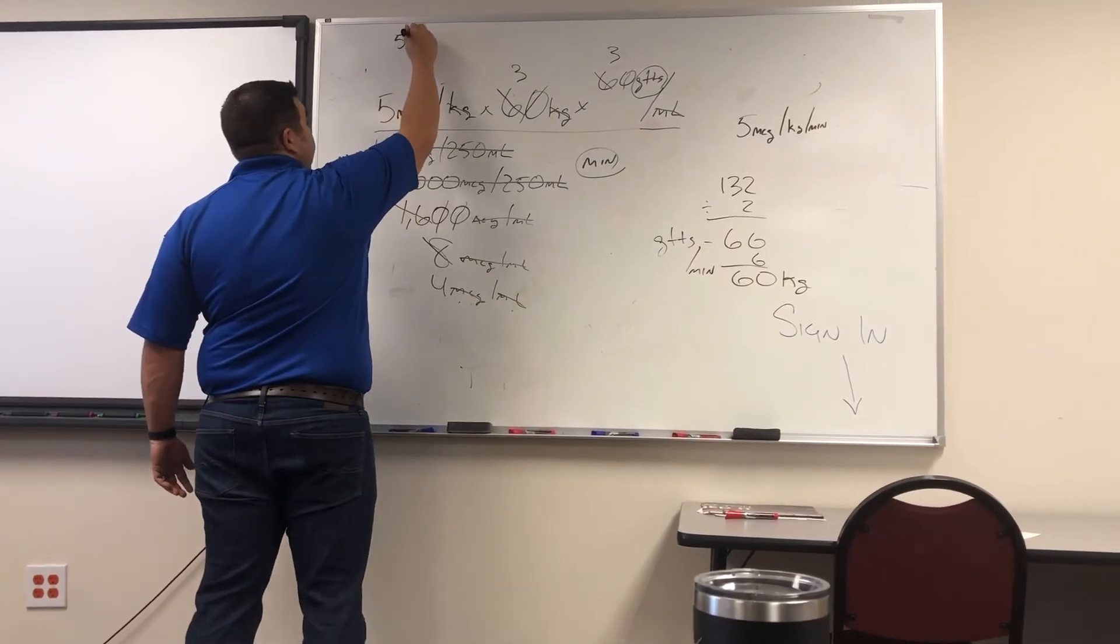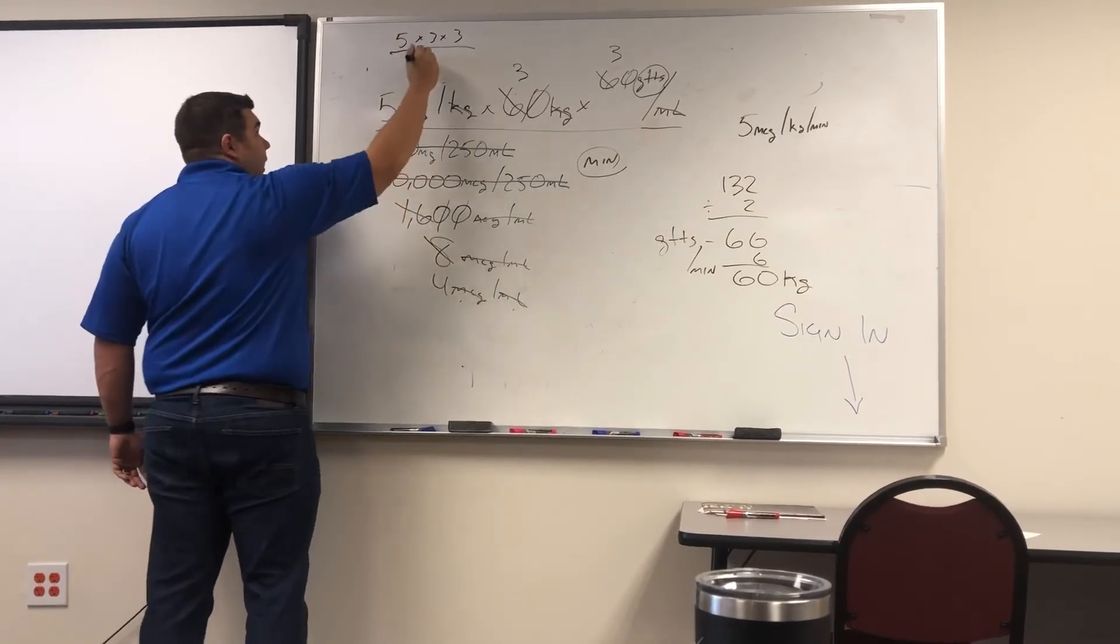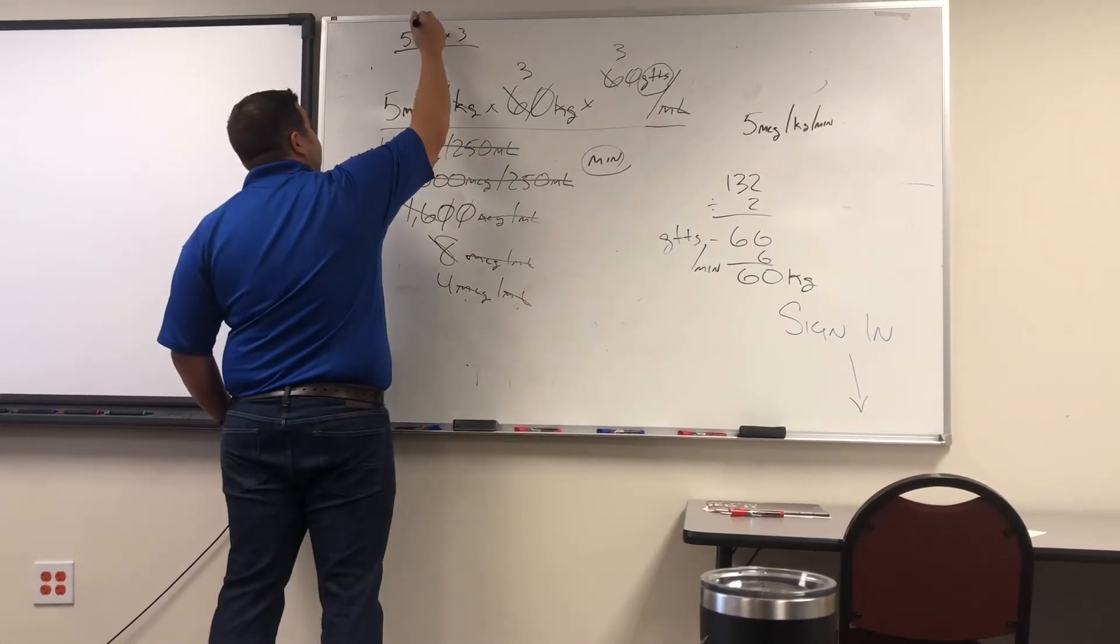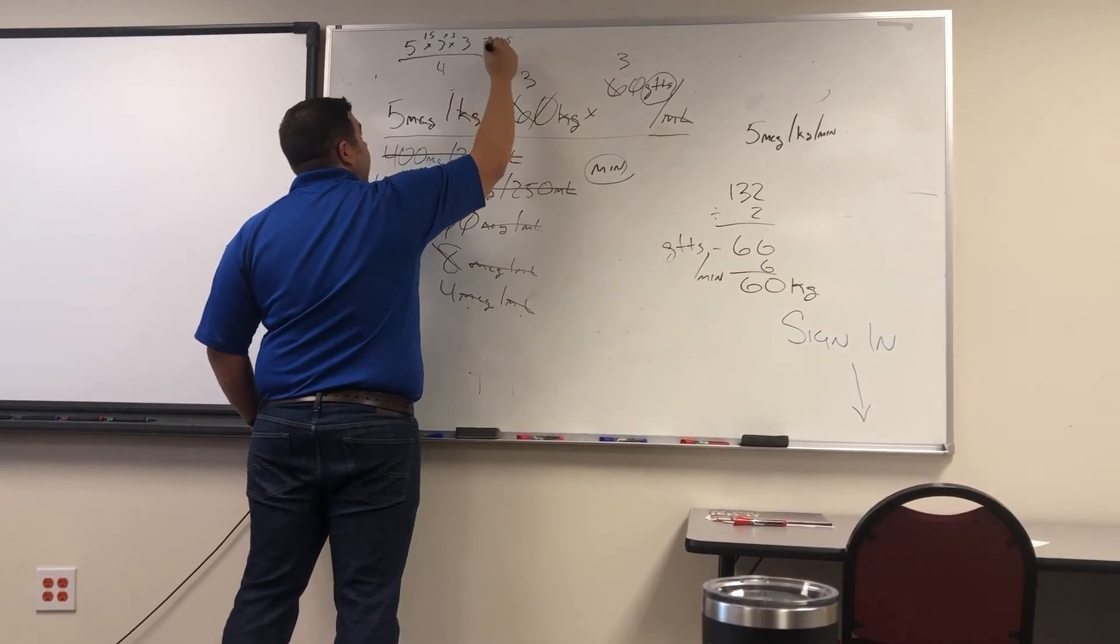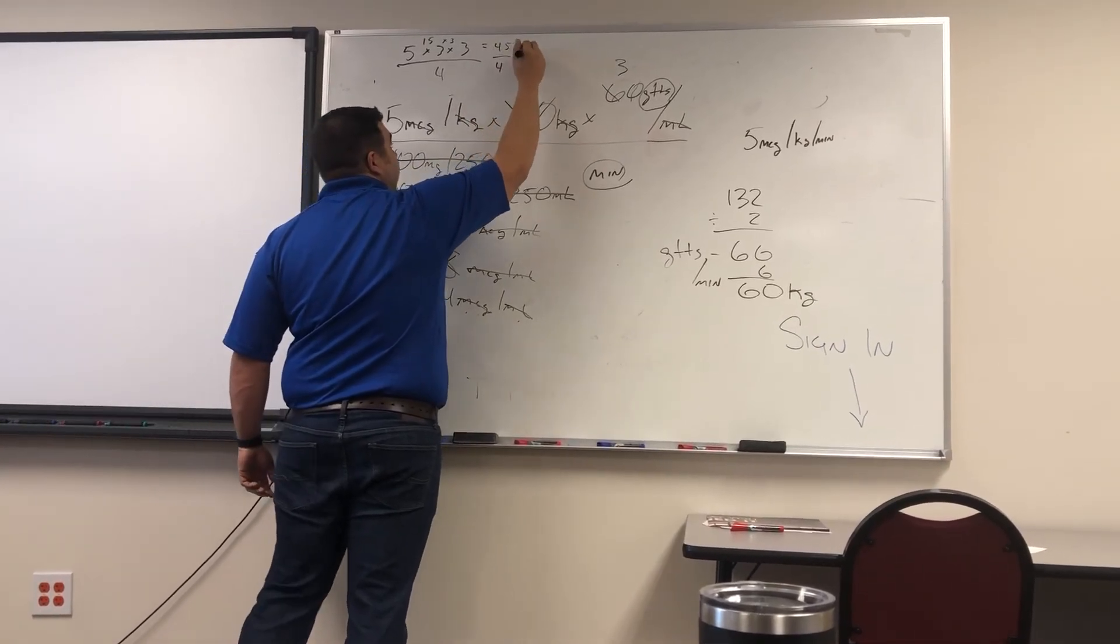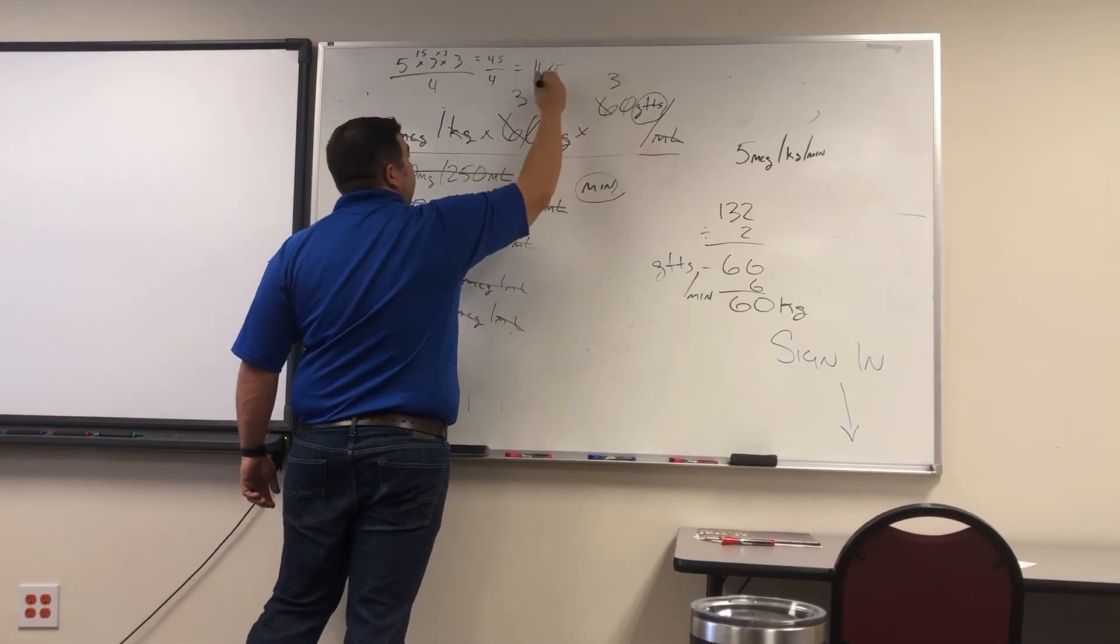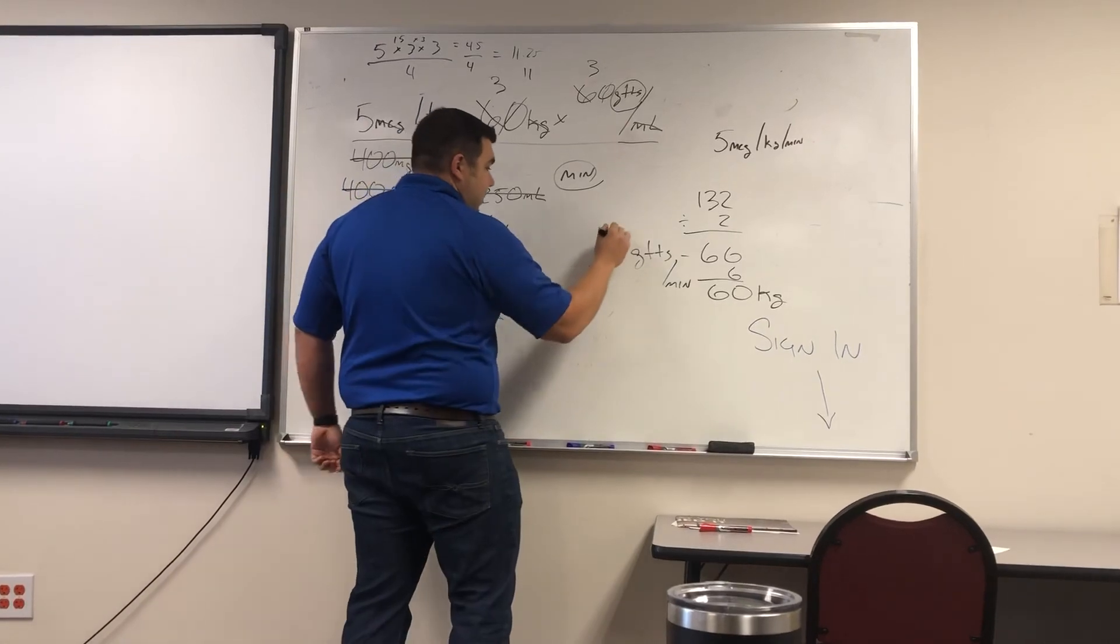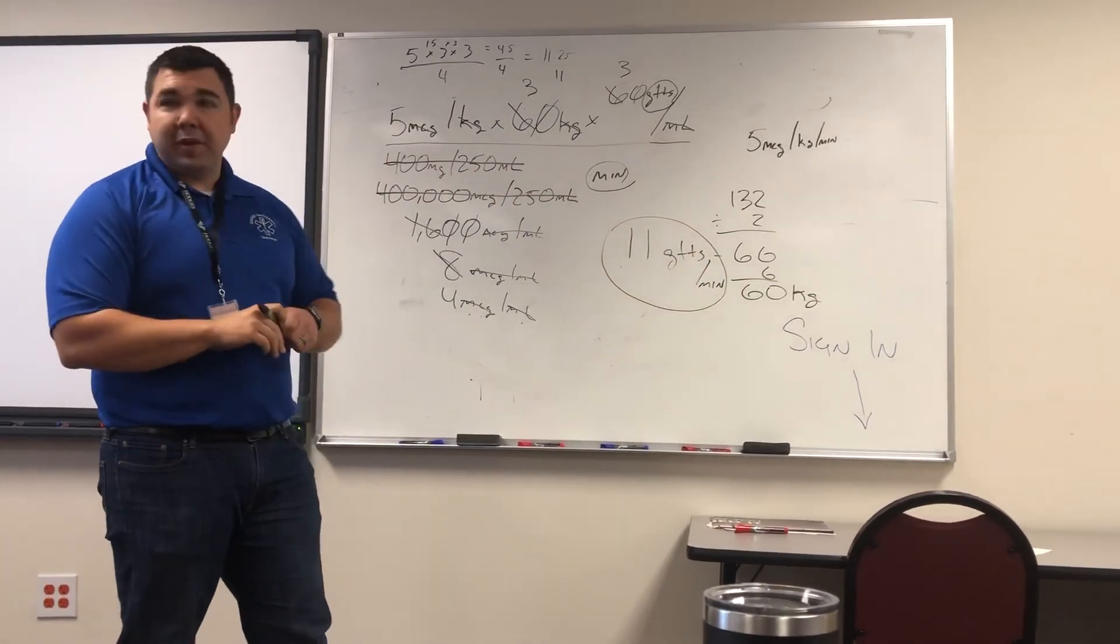And then 5 times 3 times 3 over 4. So what's 5 times 3? 15 times 3. Divided by 4 is roughly 11.25. So 11, because you're not going to count a quarter drop, right? So our solution is 11 drops per minute. Does that sound reasonable? Yes. Very good.